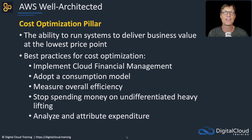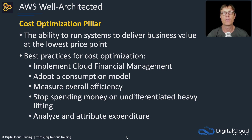And lastly, analyze and attribute expenditure — this is about being able to look at your itemized billing and understand what your costs are and where exactly they're coming from. And that's it for the five pillars of the Well-Architected Framework. Do make sure that you remember the best practices associated with each of these pillars.